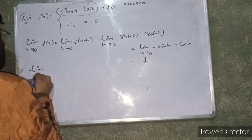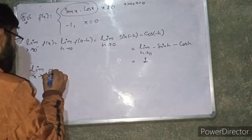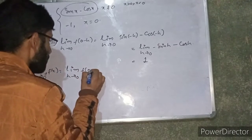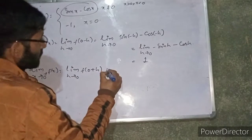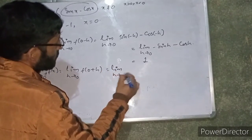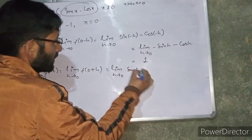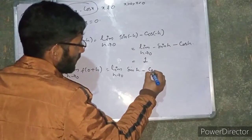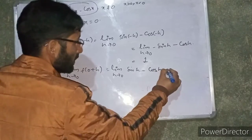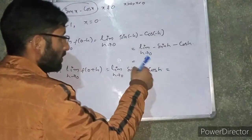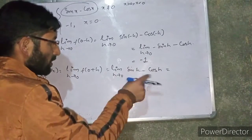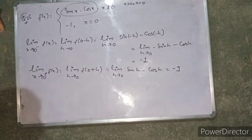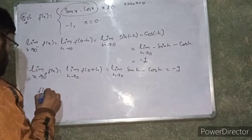Now for the right-hand limit: limit x tends to 0 positive of f of x equals limit h tends to 0 of f of 0 plus h equals limit h tends to 0 of sin h minus cos h. Substituting h equals 0, sin 0 equals 0 and cos 0 equals 1, so the right-hand limit equals 0 minus 1, which equals minus 1. Left-hand limit equals minus 1 and right-hand limit equals minus 1.